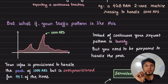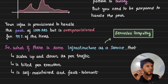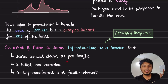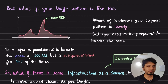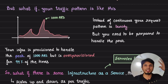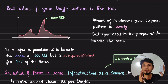For the other 99% of the time — when you're seeing only 10, 5, or 2 requests per second — why are you wasting 4 GB of RAM on that machine? This inefficiency gave rise to serverless architecture. The idea is: what if we had an infrastructure-as-a-service that scales up and down as per traffic, is billed per execution, and is self-maintained and fault tolerant?